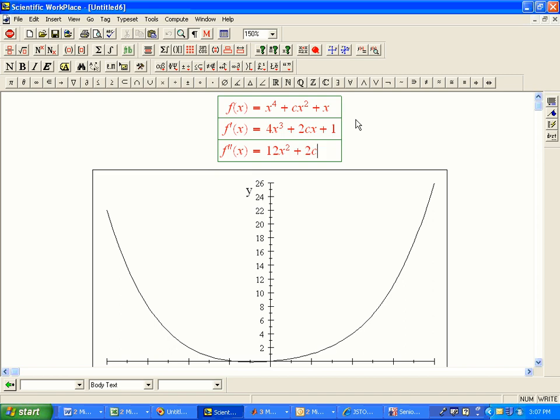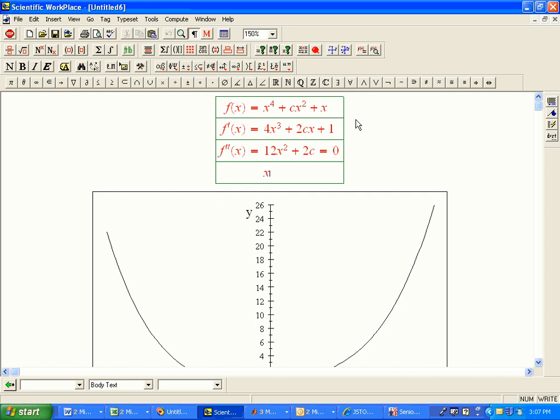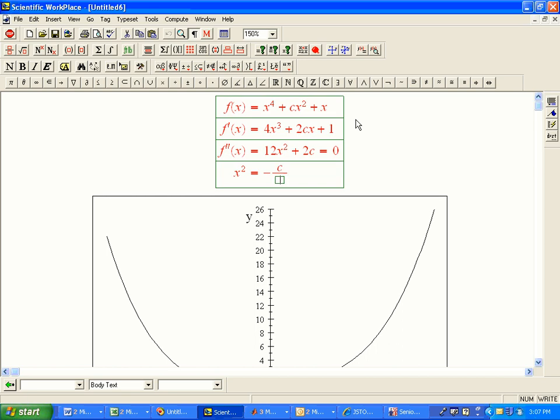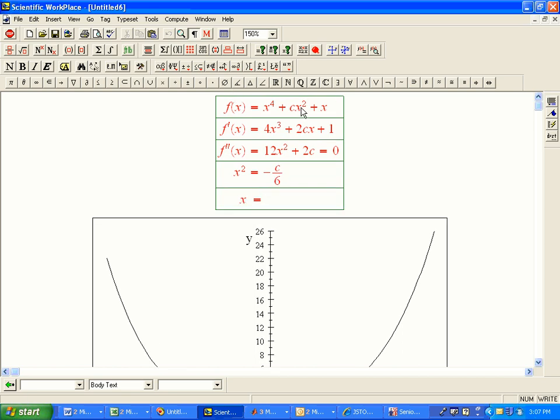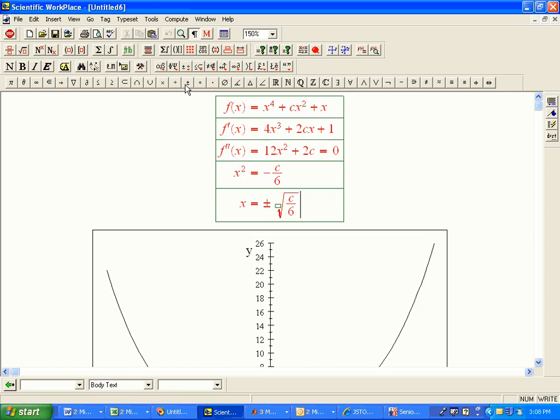So, this is what I like to call a backwards problem, really. It's a whole bunch of possibilities, and we're not saying, here's the value of c, go find the inflection points. It's, suppose there's something that's true about the inflection points, like there are some. What must be true of c? If you're going to find inflection points, we want to find sign changes for f double prime, and so the first thing to do is find where that's zero. We can solve that for x. x squared is minus c over 6, and so x is plus or minus root minus c over 6.